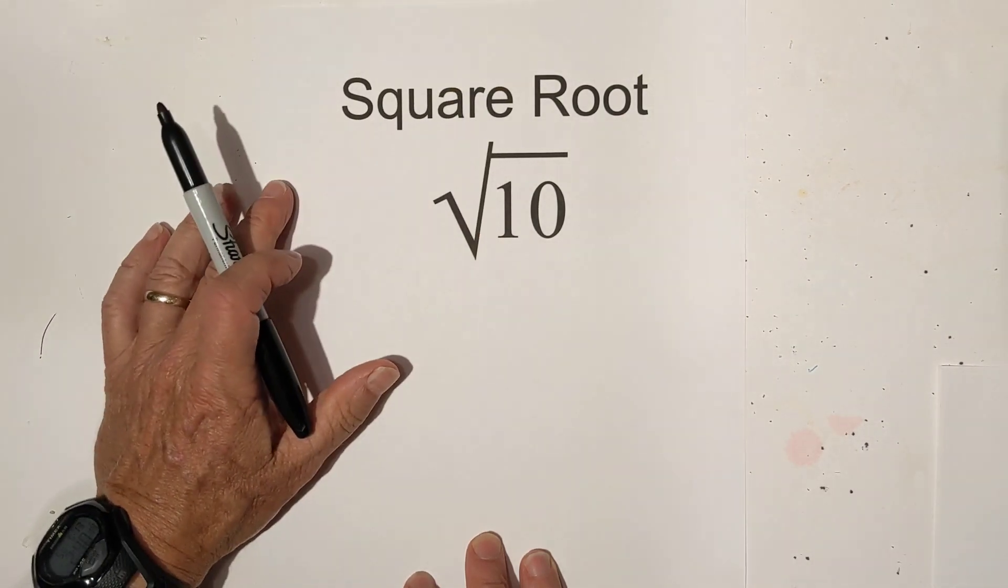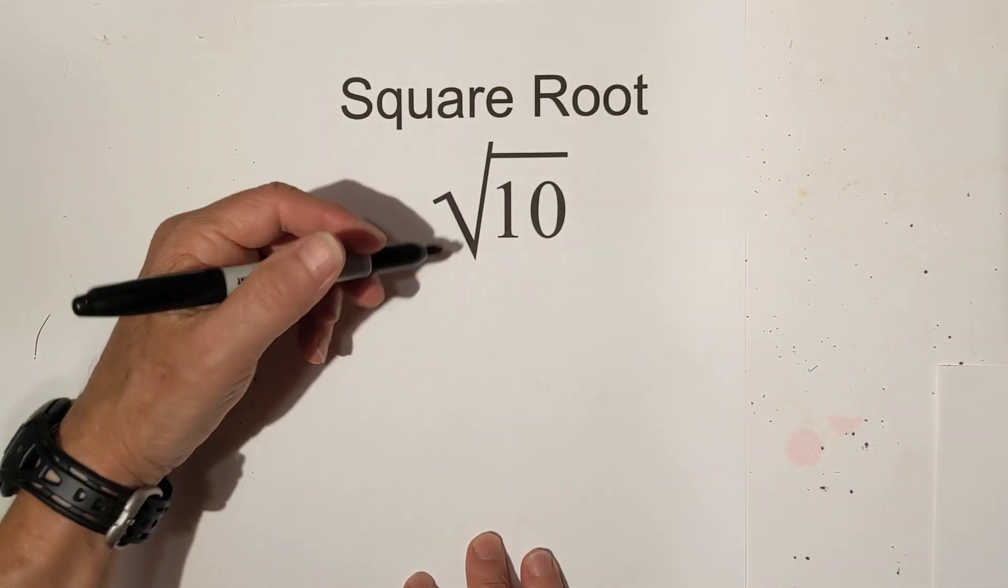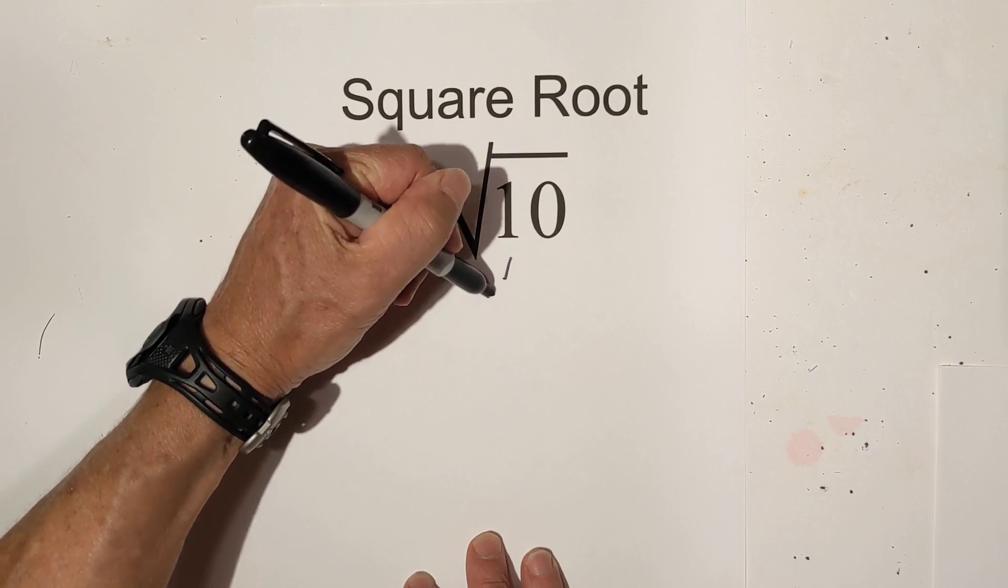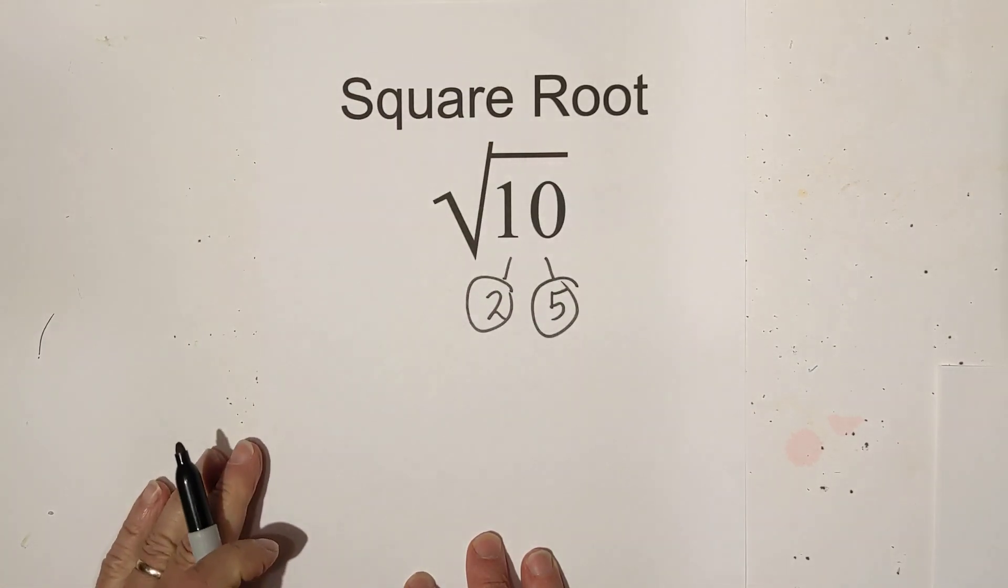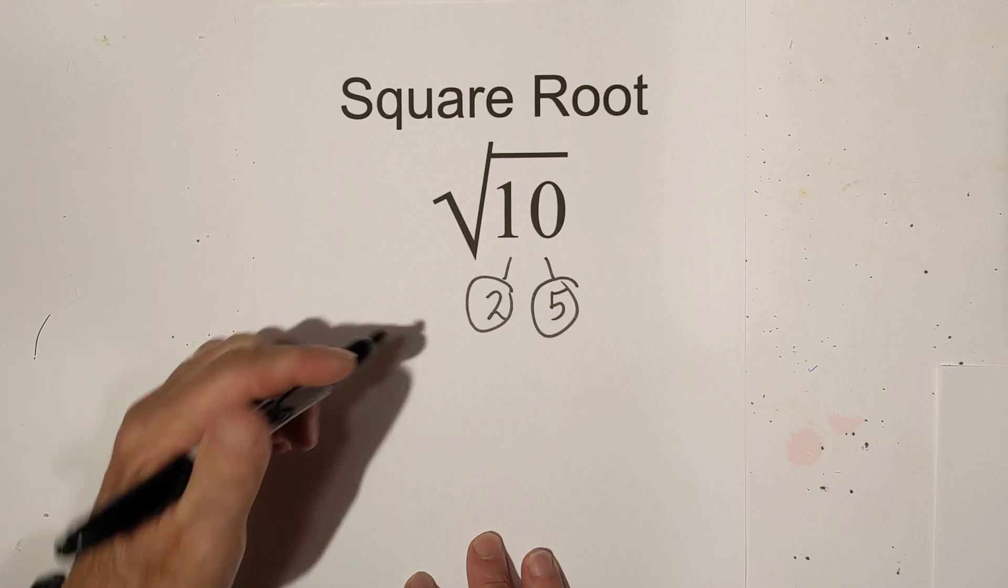The square root of 10 actually is simplified and let me show you why. If you have a factor tree you can do 2 times 5 equals 10 and they are both prime numbers.